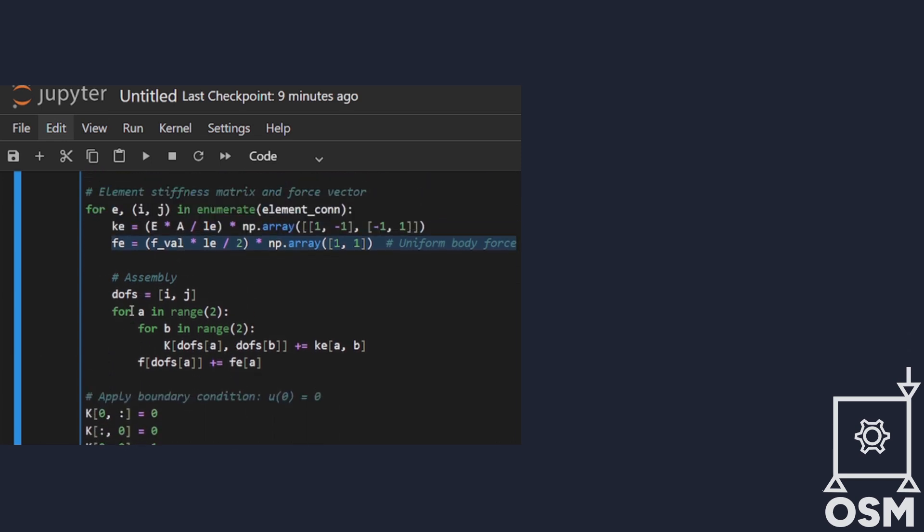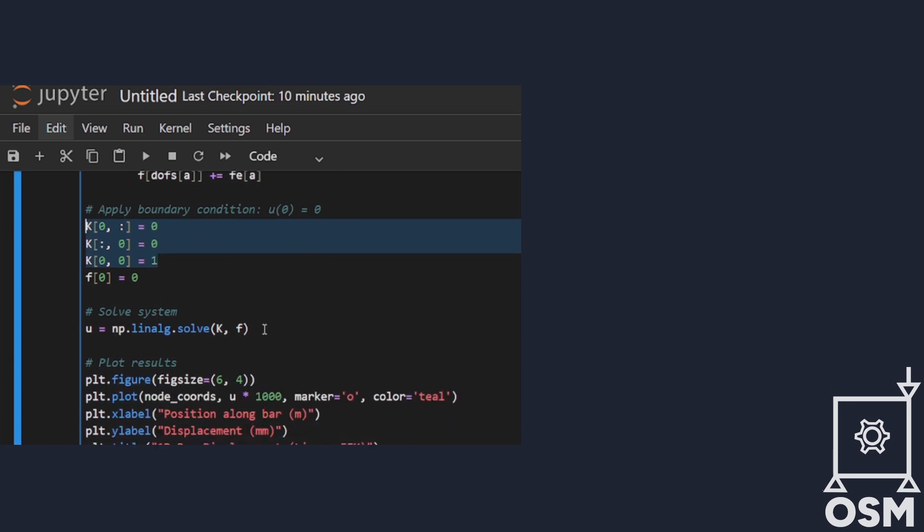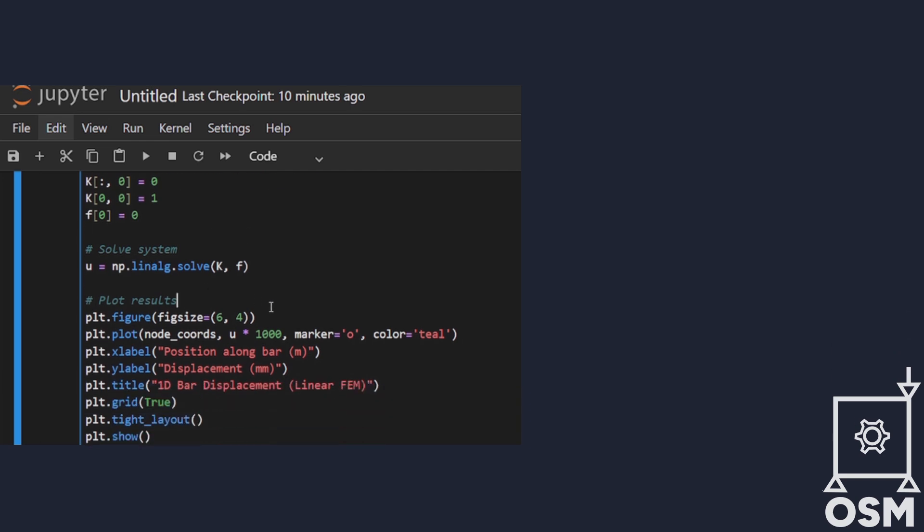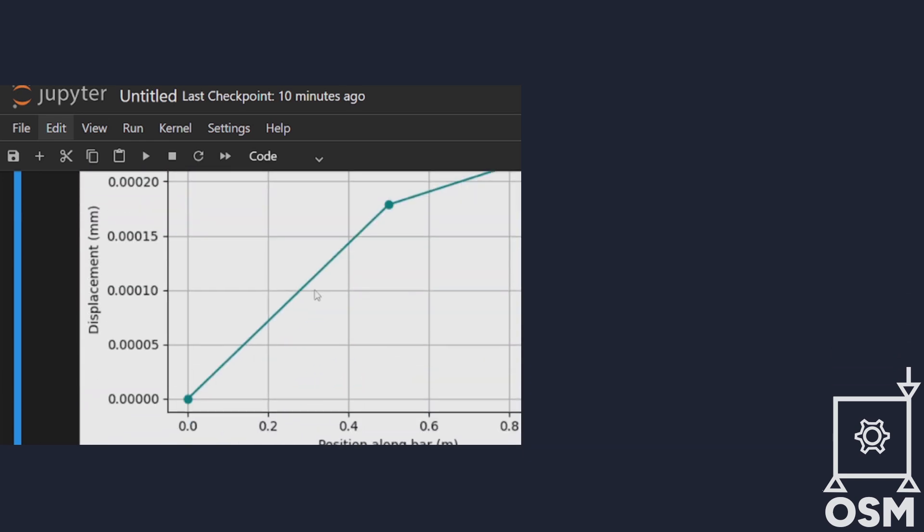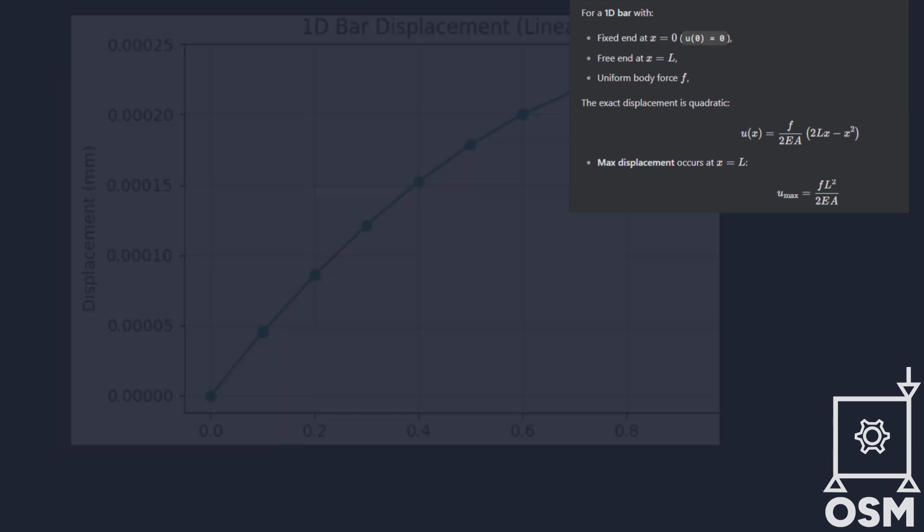These are assembled into the global stiffness matrix and force vector. Then, we apply a Dirichlet boundary condition at the left end, displacement equals zero. This is done by overwriting the first row and column of the global matrix. We solve the resulting linear system using NumPy solver. Finally, we plot the displacement field. Since the body force is uniform and the boundary condition is fixed at one end, the displacement increases quadratically toward the free end.